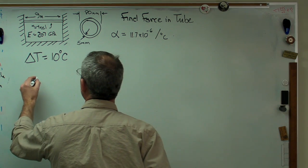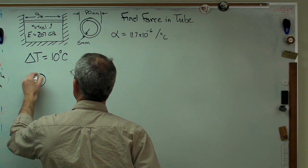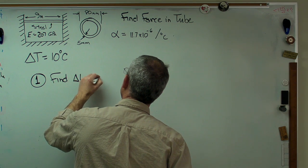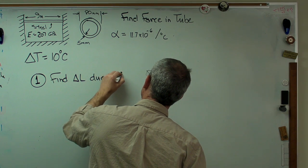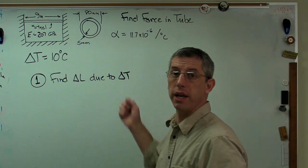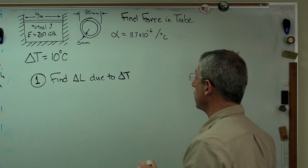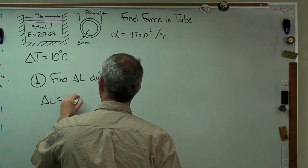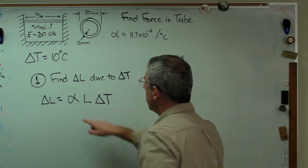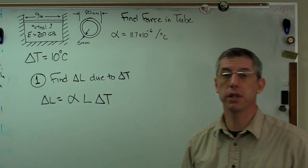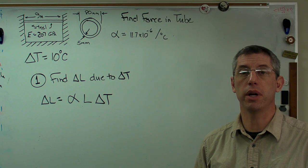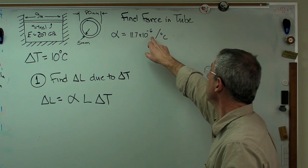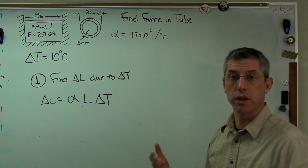We're going to find delta L due to delta T, the change in length due to the change in temperature. And the expression is pretty simple, fortunately. It's alpha L delta T. Alpha is a coefficient of thermal expansion. This is a material property. All materials have their own coefficient of thermal expansion. And the units are kind of funny. It's one over temperature change.